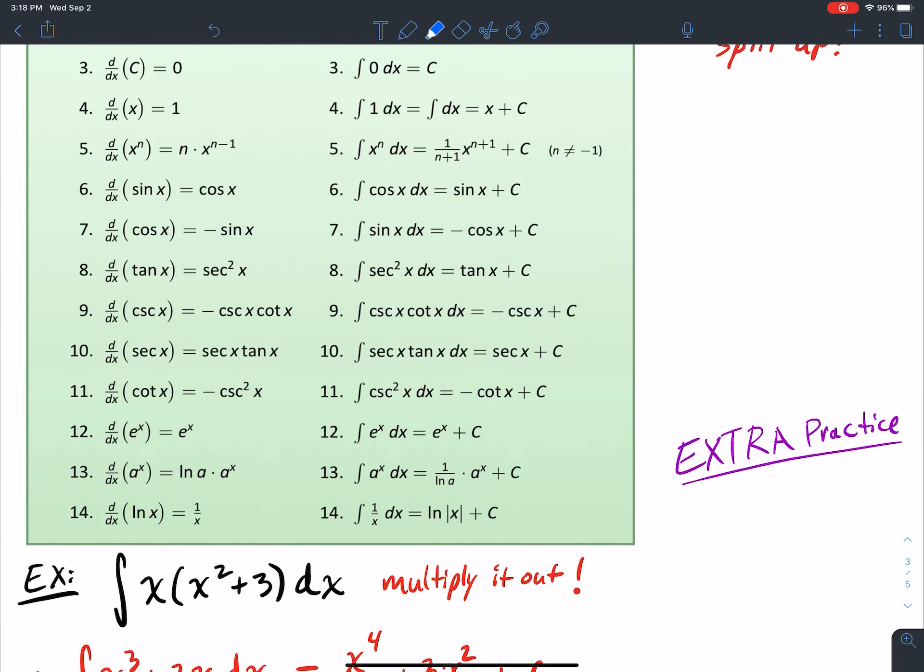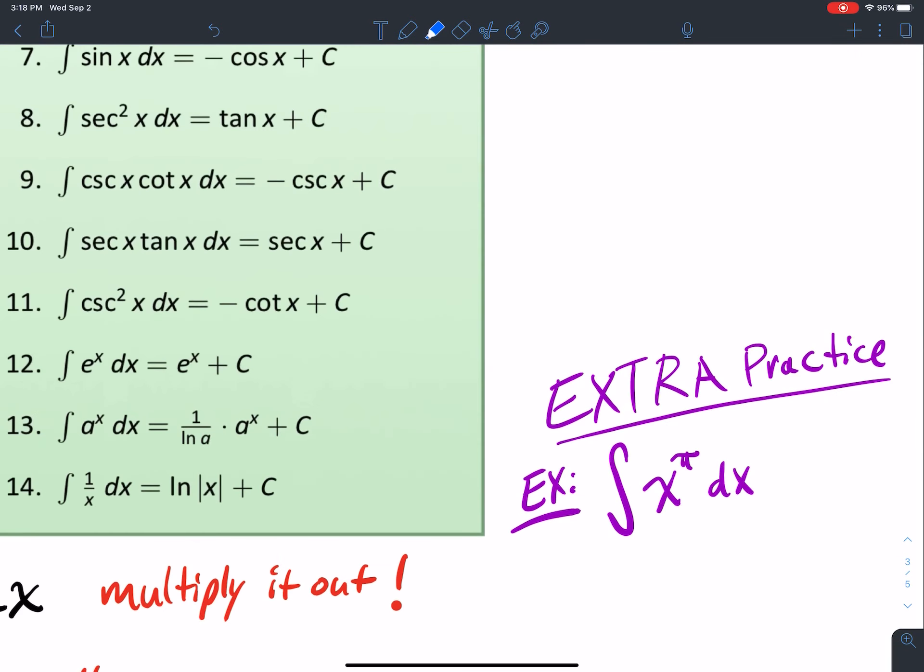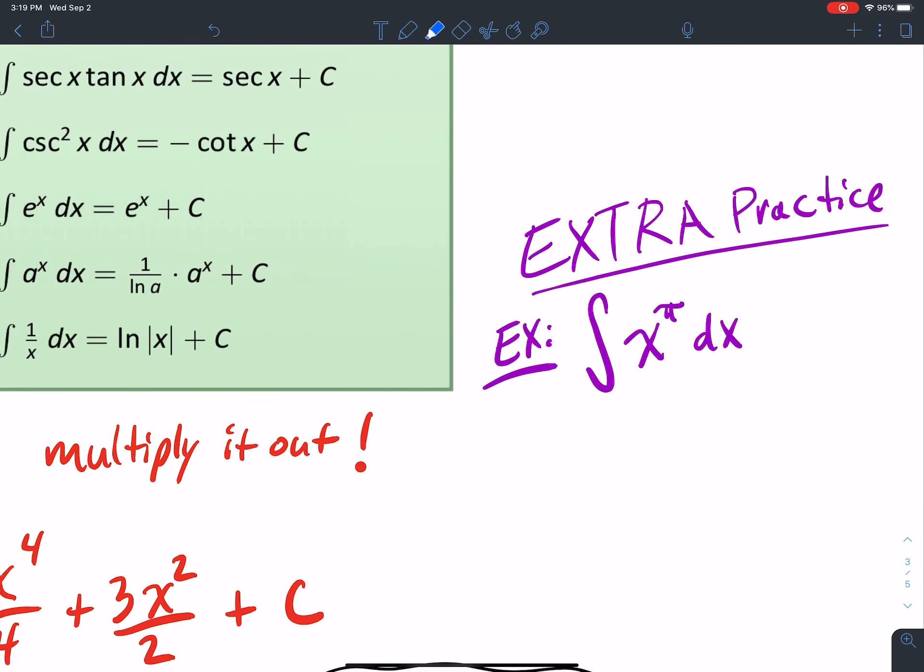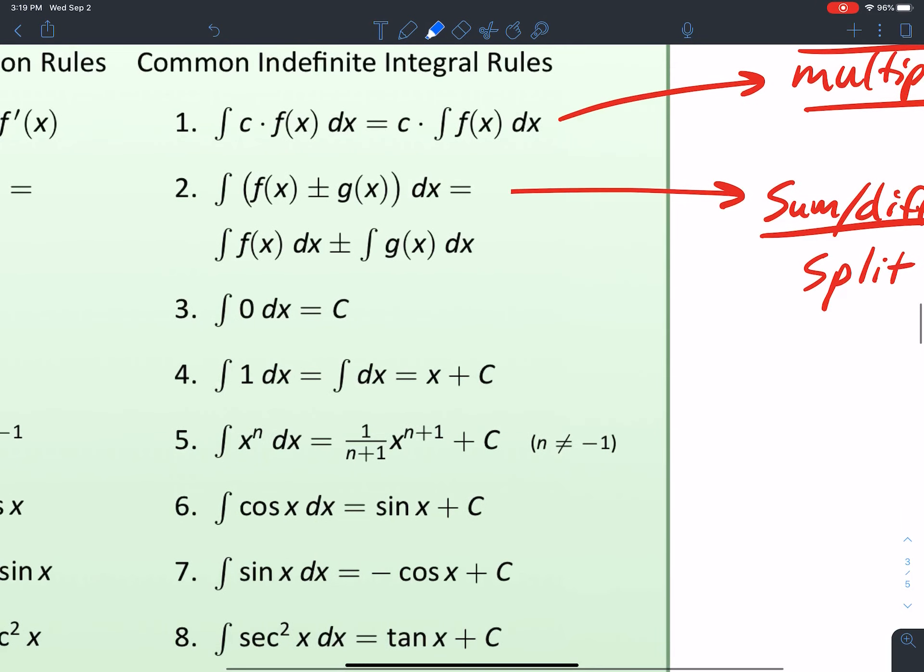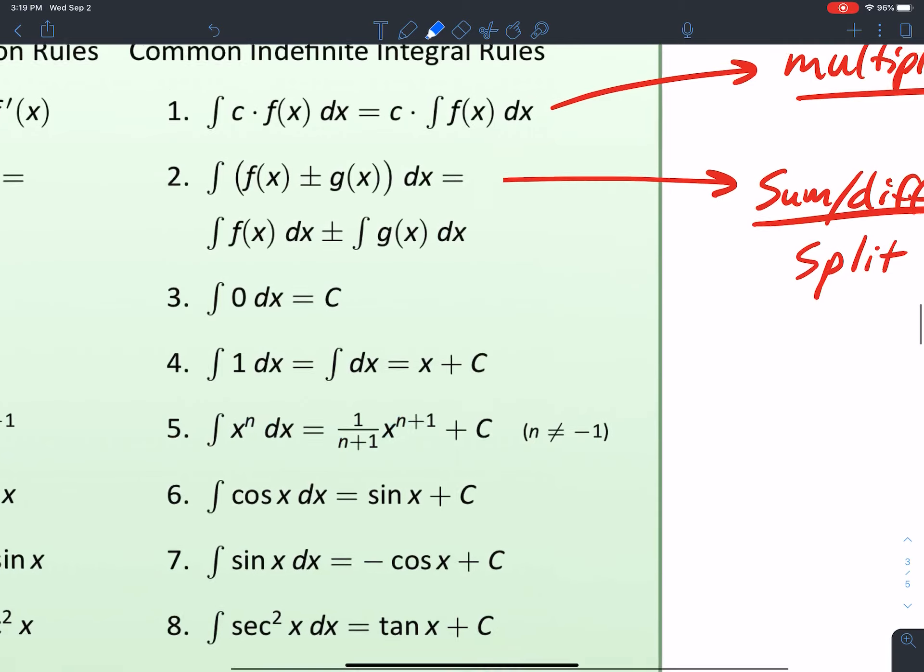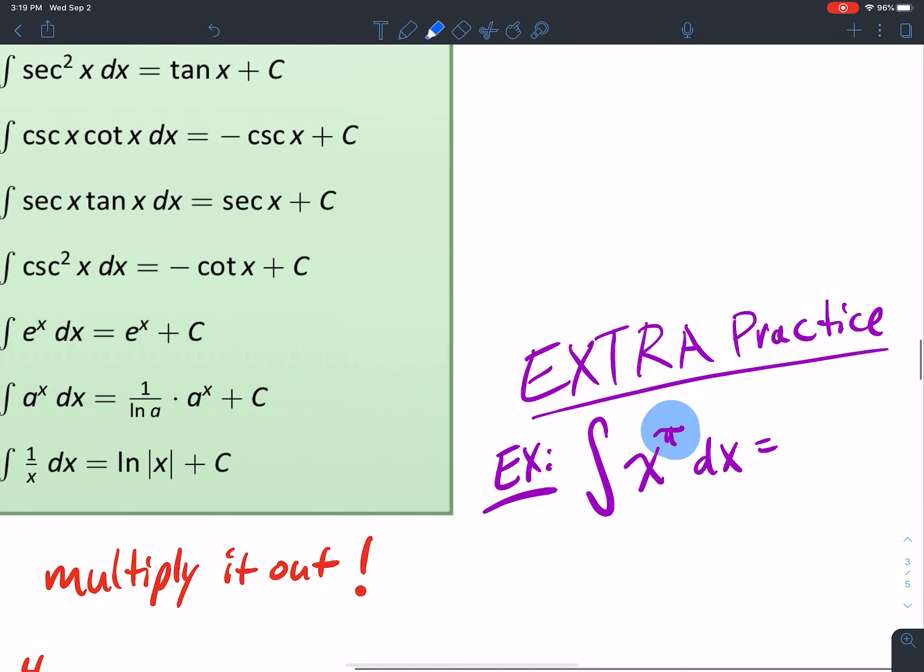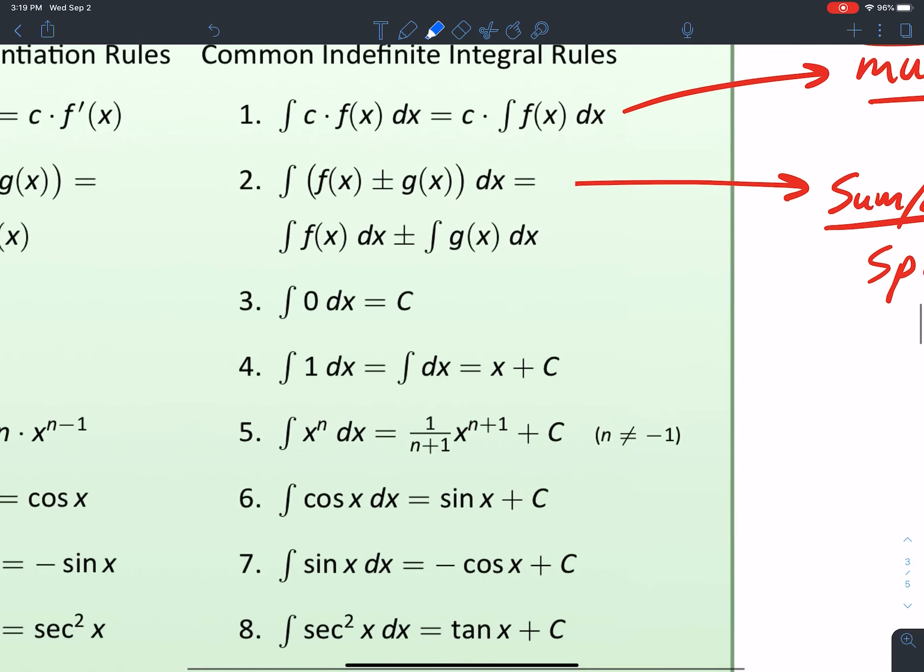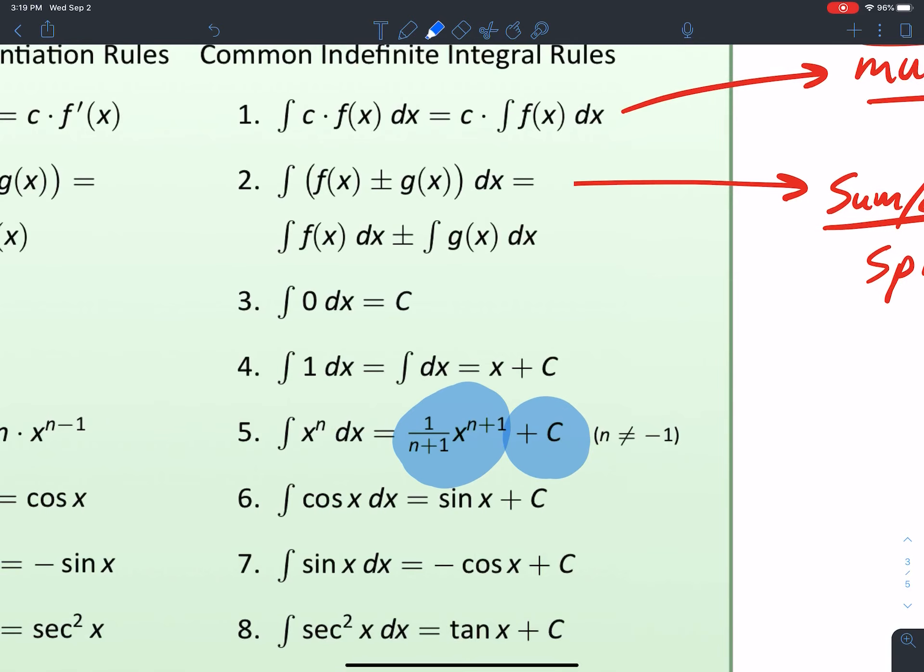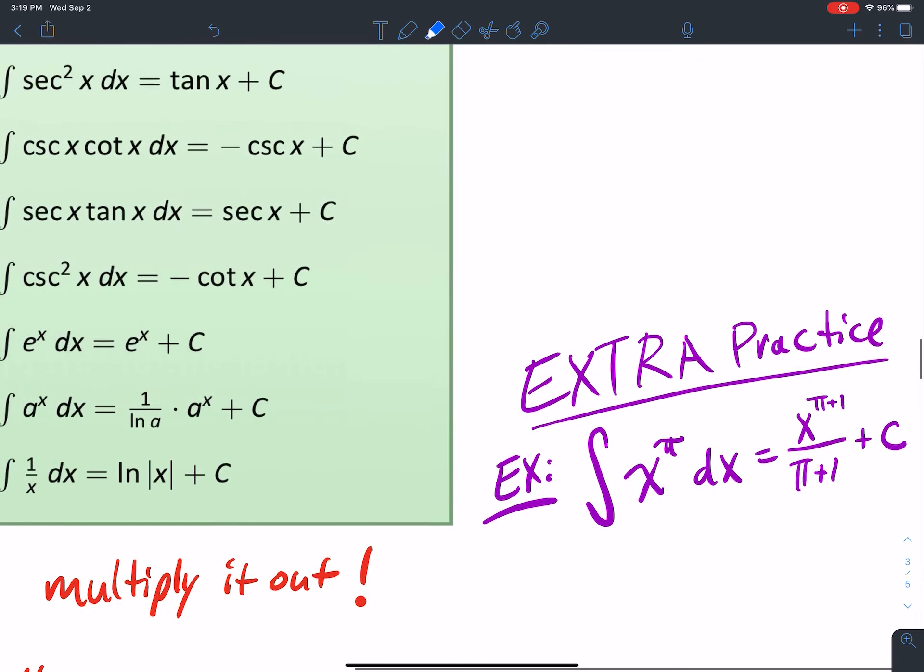For a little bit of extra here, say I want to take the antiderivative, the indefinite integral of x to the π. Well, what does the power rule say for integration? Well, what does it say? It says add one to the exponent and divide by what that new exponent is. So if I add one to π, I get x to the π plus one, and then I divide by π plus one. Is that my final answer? That's not it, right? I also have a plus C there. So don't forget the plus C.